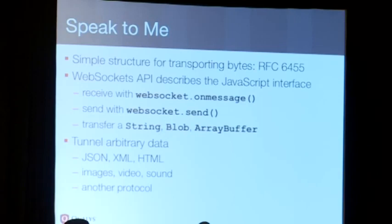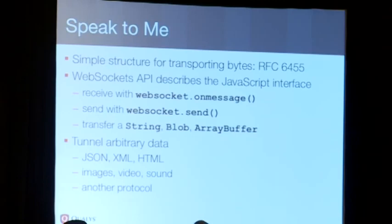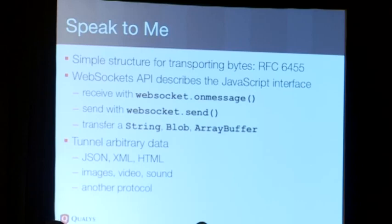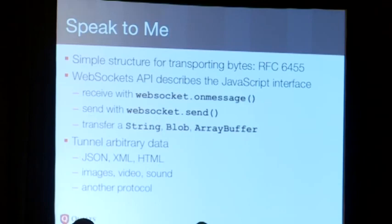WebSockets, as defined in RFC6455, has two parts. One part is the JavaScript API, which is very simple — it defines a couple of functions and event handlers, and enables a developer to write code that can move strings, blobs, and array buffers around. Using that tunnel that is WebSockets, you can move data in binary or text, in any arbitrary format, or you can wrap it in JSON, XML, or HTML.